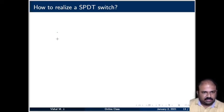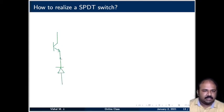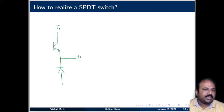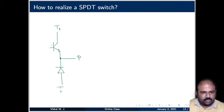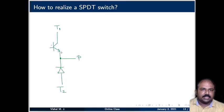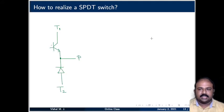The most common approach is something like this, which will be used in our DC-DC converters extensively. The midpoint is called the pole, and the collector of the transistor is called T1. This could be a transistor, a MOSFET, or an IGBT as the case may be. And this is the diode — this is throw 2, T2. This is the SPDT switch we are going to use in our DC-DC converter analysis.